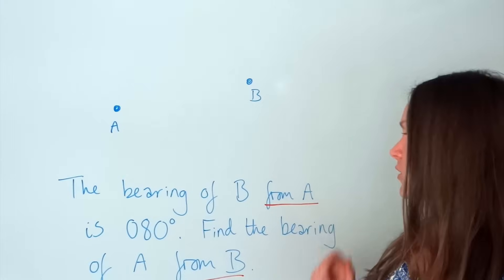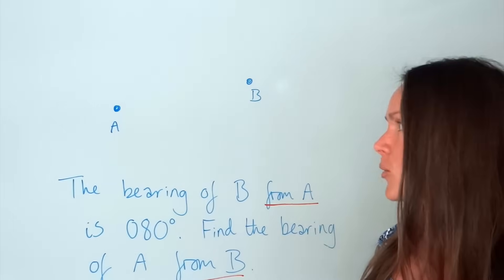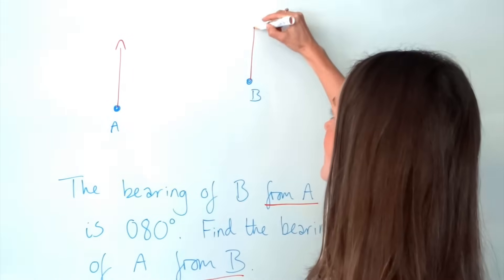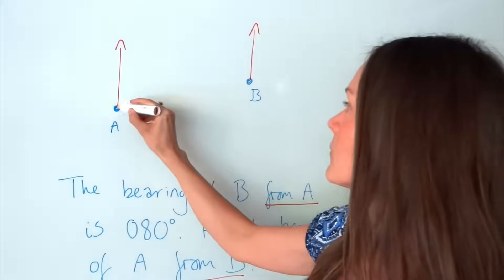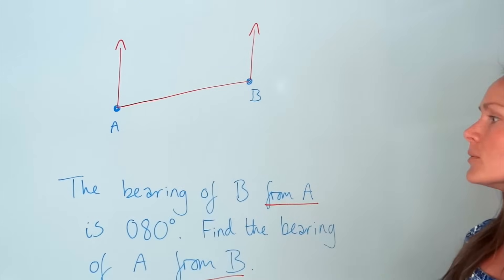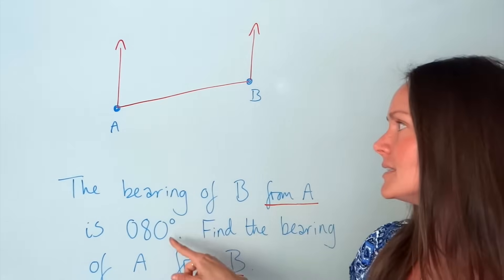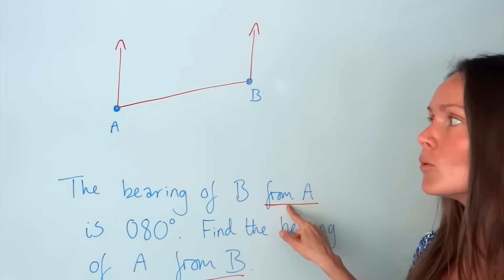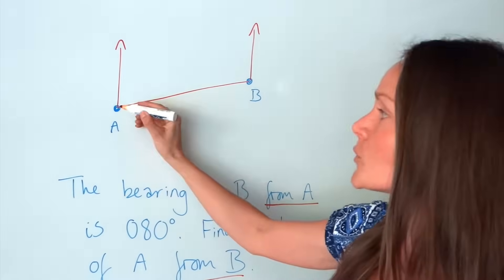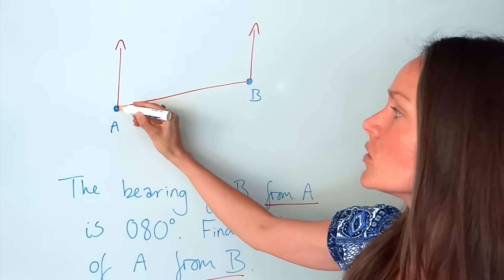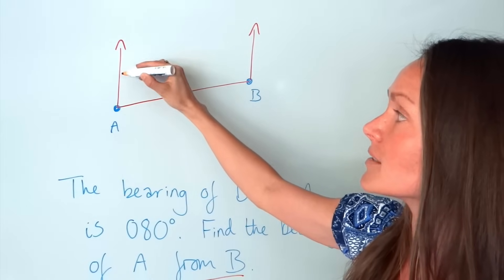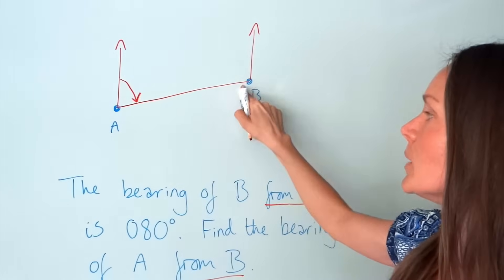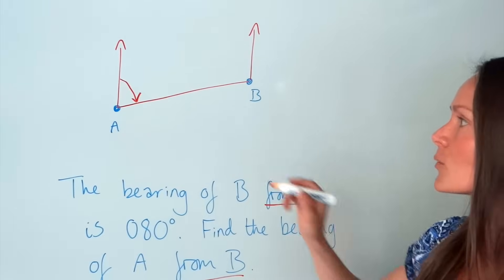In this question, the bearing of B from A is 80 degrees. I'm going to add in the north arrows and join the points A and B on the diagram. The bearing is from A, so we start measuring from the north arrow of A. Put your pen just above the point, somewhere along the north arrow, and draw an arrow clockwise until you hit the line that travels to B. This angle is 80 degrees.